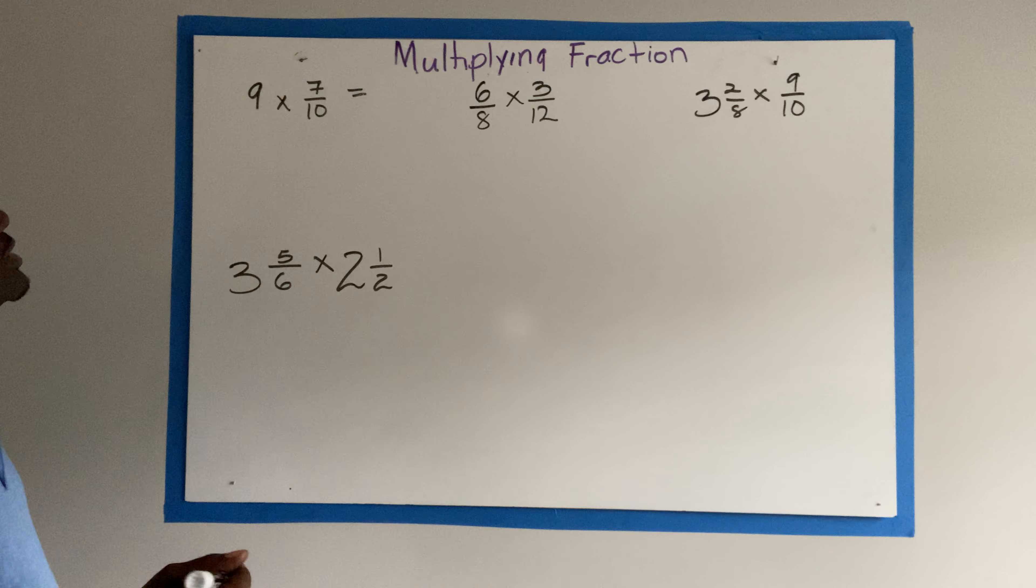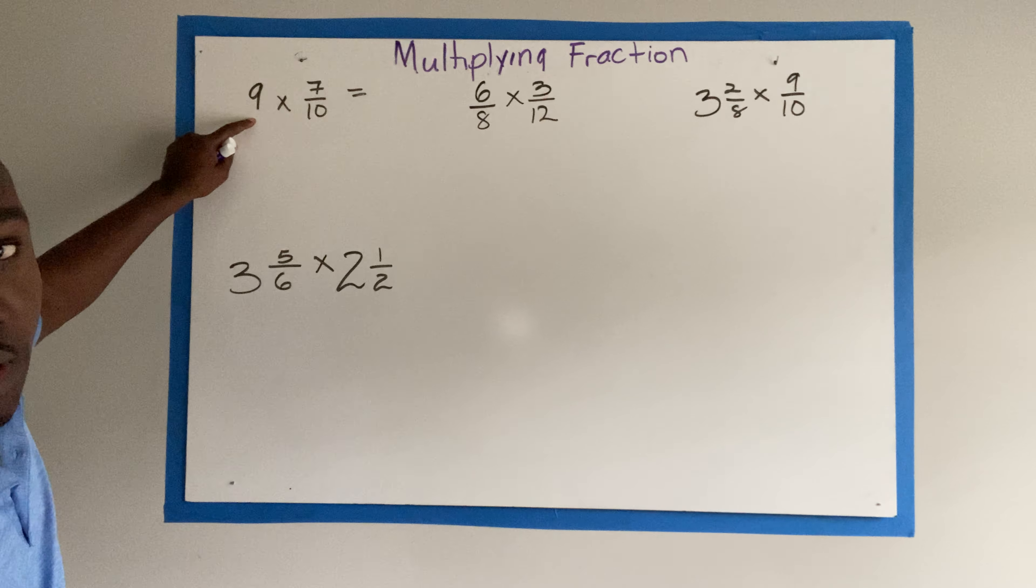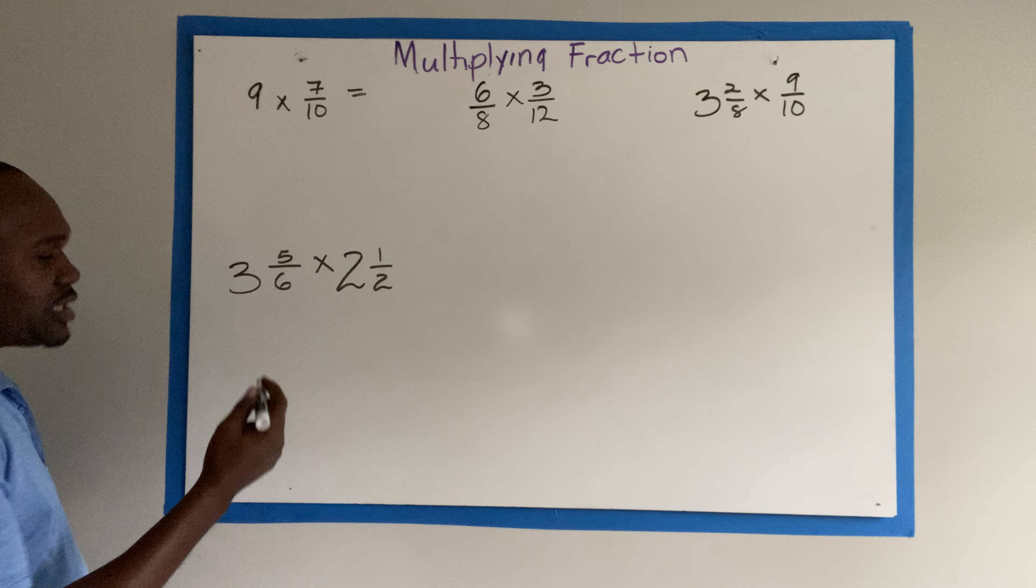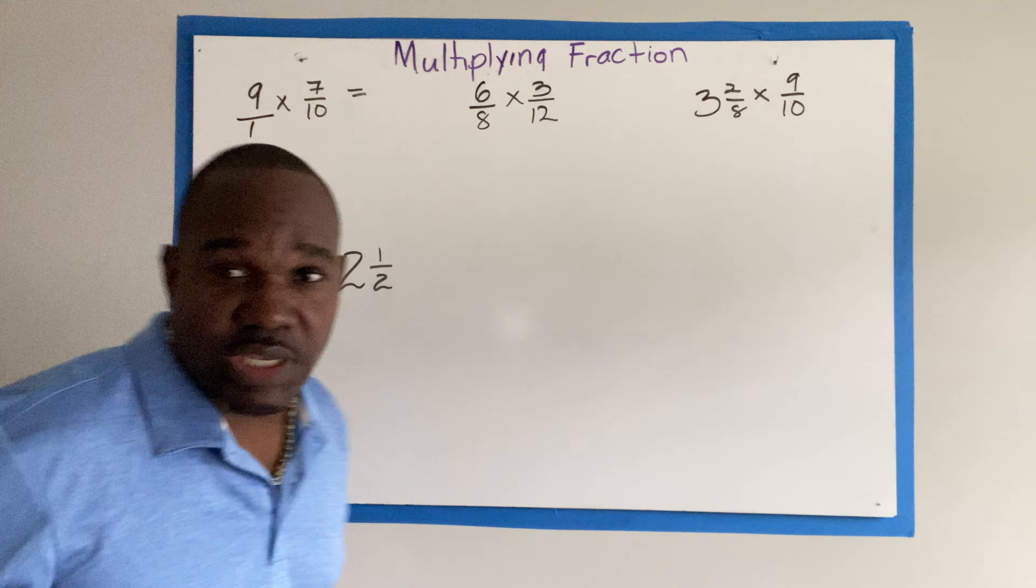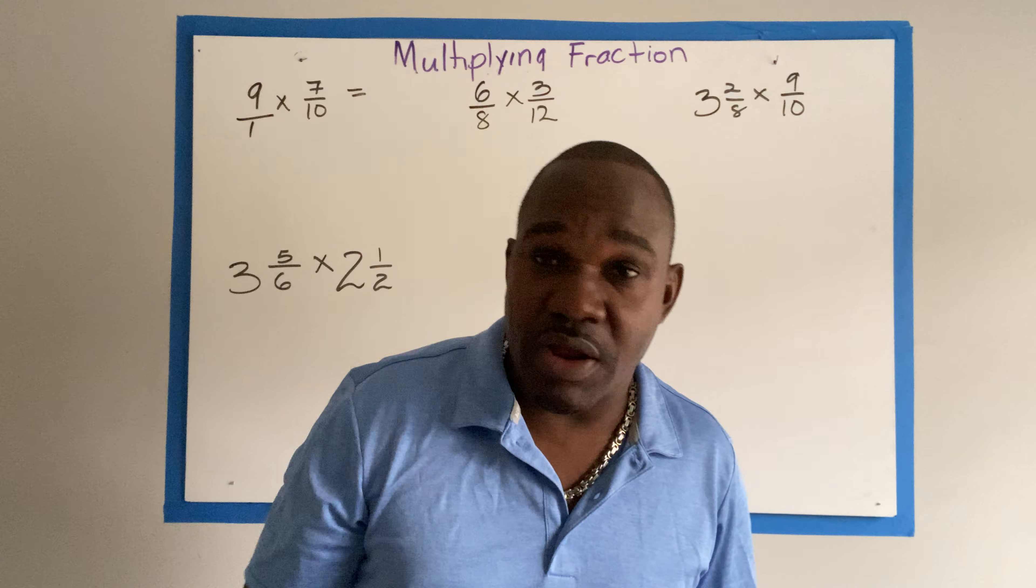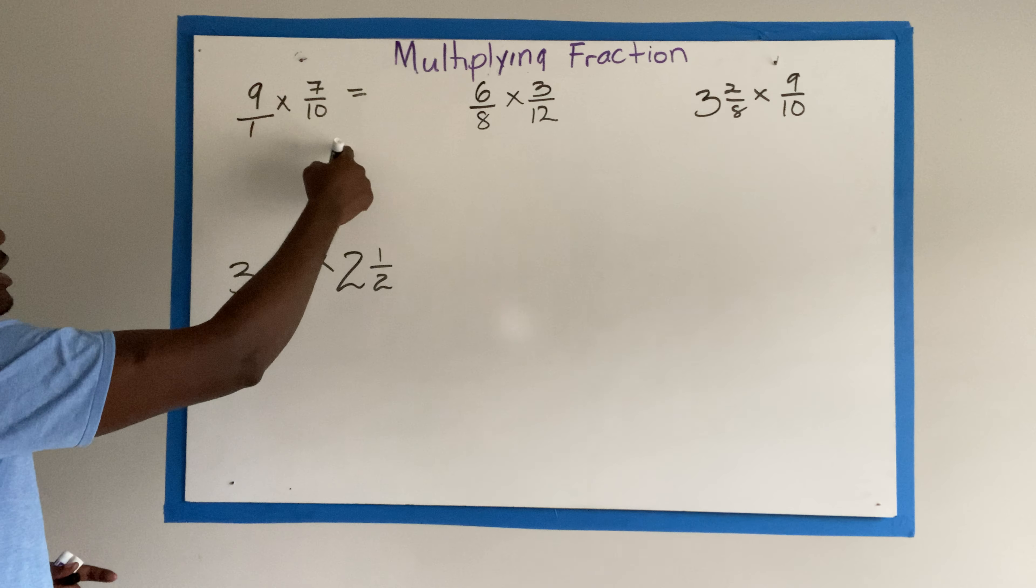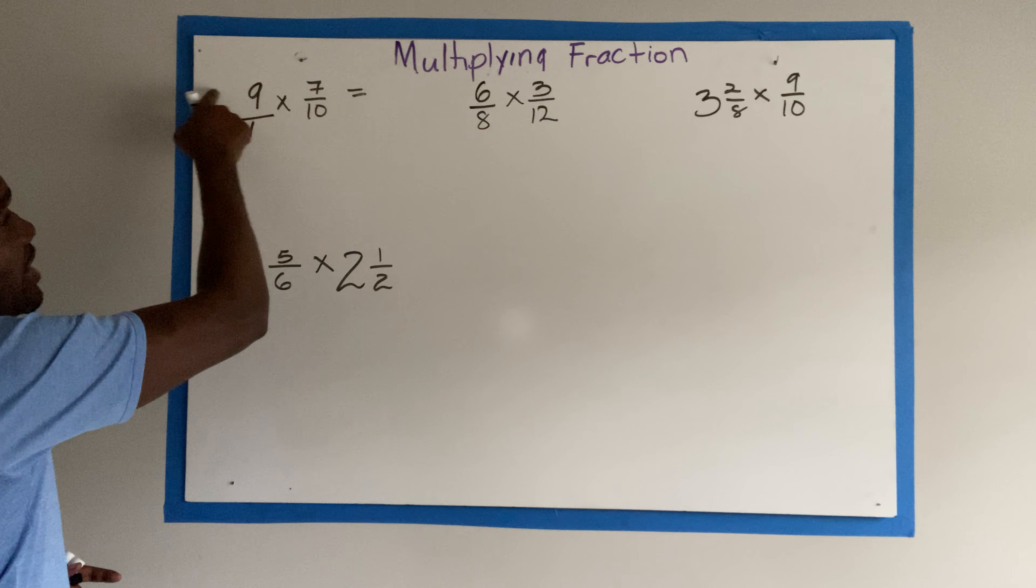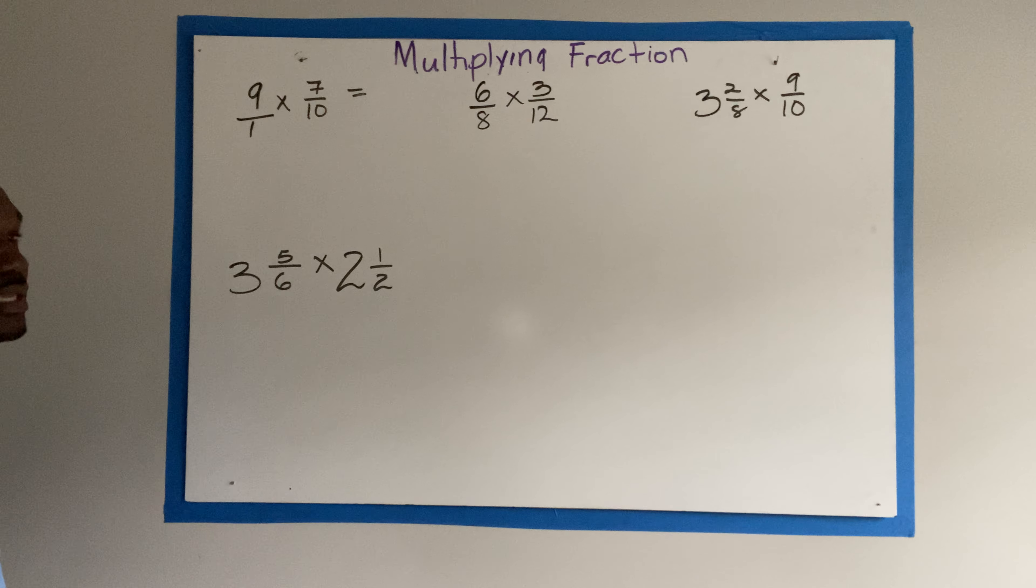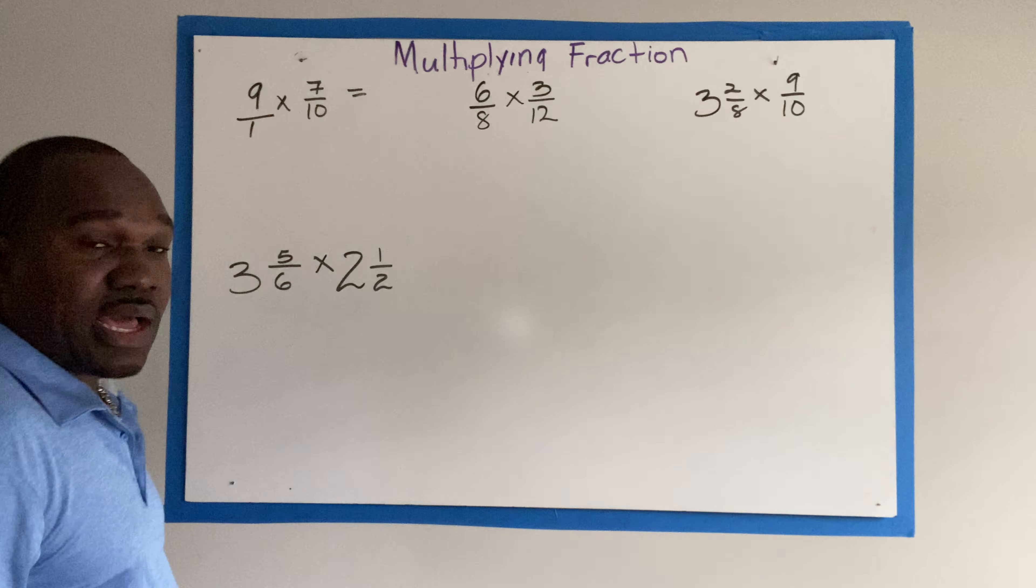9 times 7 over 10. 9 here is a whole number. A whole number understood as a fraction with a denominator of 1. Now the first thing we do when we are multiplying fractions, we check for cancellation. We can cancel diagonally, vertically, but never horizontally. After our check we realize that we can't cancel.